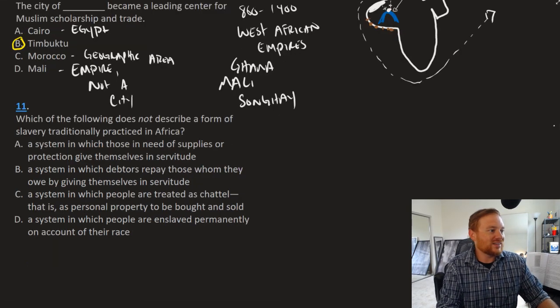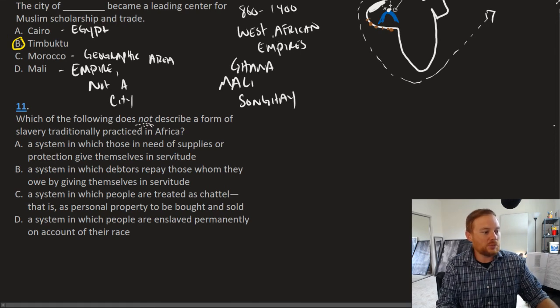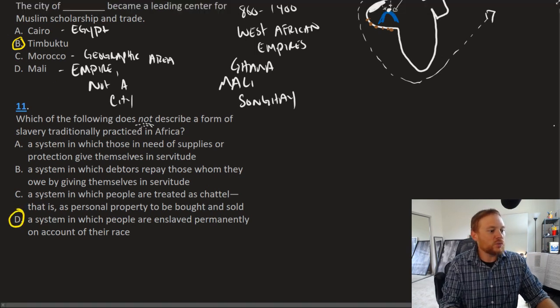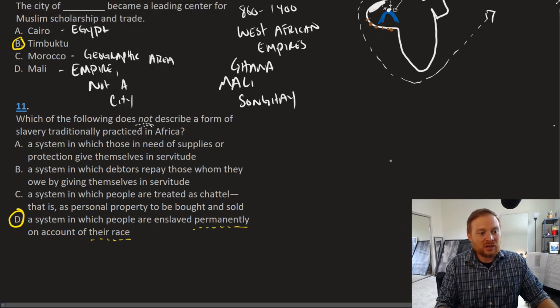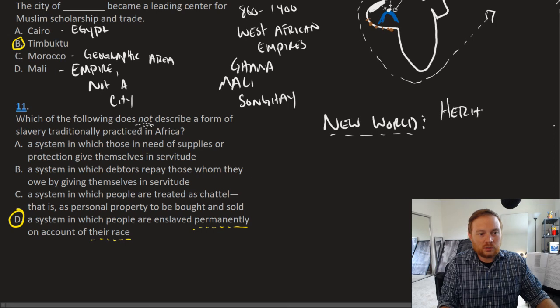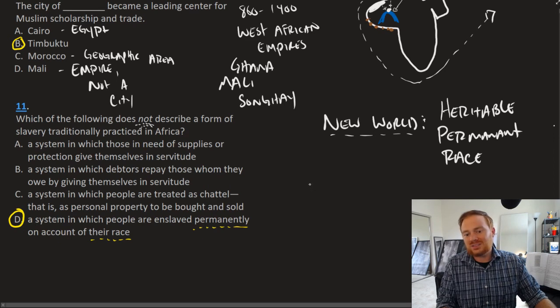Last question. Question number 11, which of the following does not, again, pay attention to this right here. This is tricky. Which of the following does not describe a form of slavery traditionally practiced in Africa? The correct answer here is question D, a system in which people are enslaved permanently on account of their race. When we compare slavery historically and slavery in the new world, some of the key characteristics of new world slavery, and this is especially true after the development of it, is that new world slavery is heritable. It is permanent or a lifetime sentence and increasingly becomes based on race, white and black. So the correct answer is D. All of these other ones were part or could be part of what was considered slavery in Africa or the old world. So I'll go ahead and leave it at that.